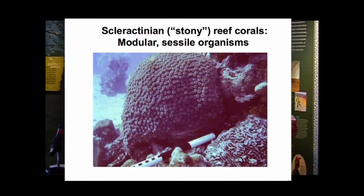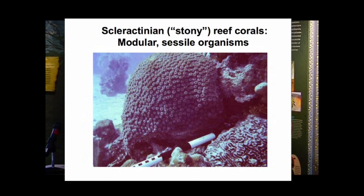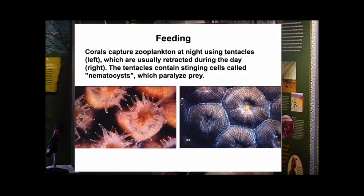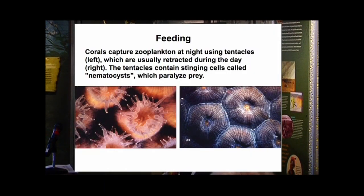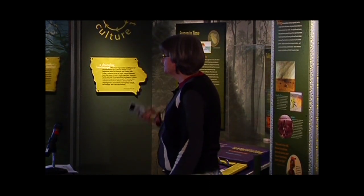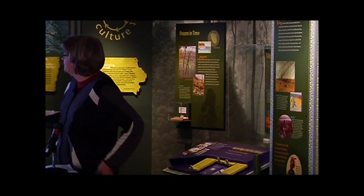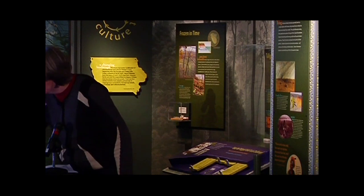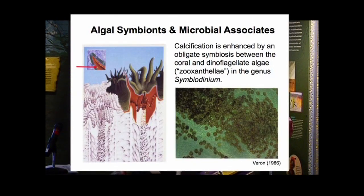Reefs are built by stony corals, sometimes called scleractinian corals. The individuals consist of cylindrical-shaped structures with a central mouth surrounded by tentacles; those that build reefs tend to be colonial—99% are colonial. The members of colonies are functionally and morphologically identical, though these organisms are highly phenotypically plastic, changing their morphology in response to the environment. Corals capture zooplankton at night using tentacles armed with nematocysts to paralyze prey, which is then brought into the central mouth.